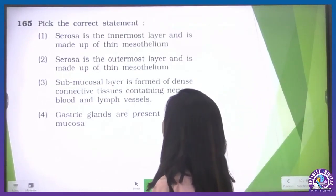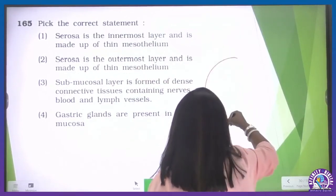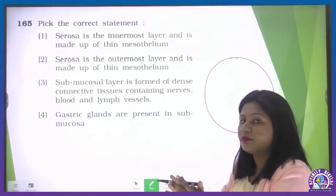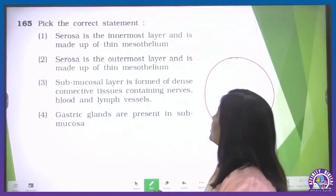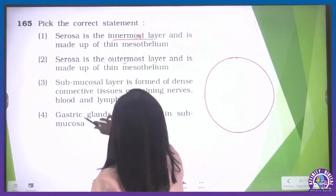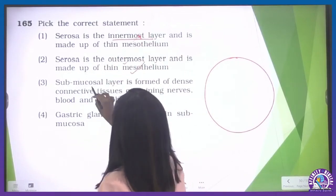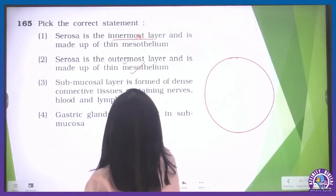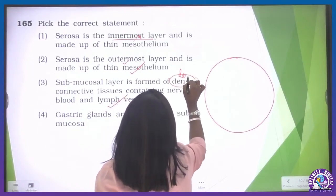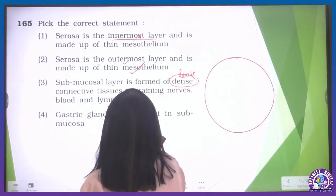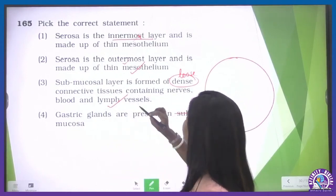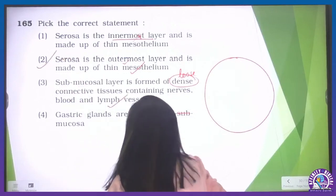Let us pick the correct statement. Serosa — this refers to the outermost layer of the elementary canal's transverse section. Serosa is the outermost layer, not innermost — it is made of thin mesothelium, so that is correct. Submucosal layer: it is formed of loose connective tissue (not dense) containing nerves and lymph vessels. Gastric glands are present only in the mucosa, not in the submucosa. So the second option is our correct statement.